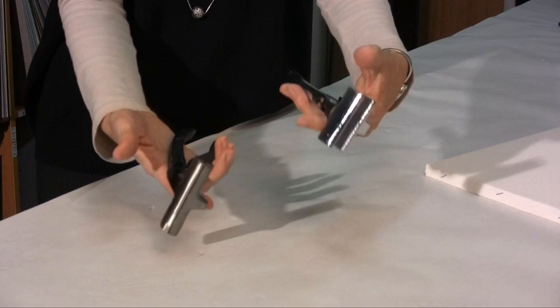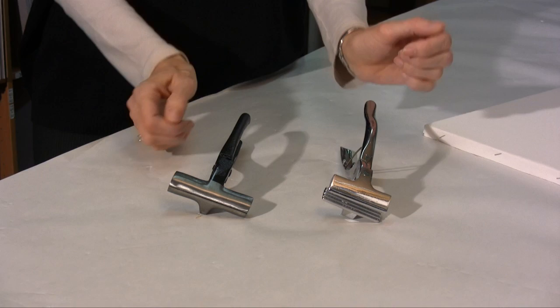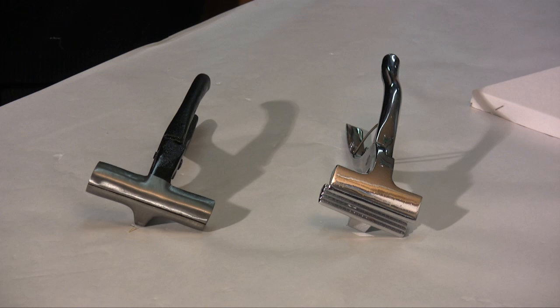The chrome pliers are lighter. They weigh 360 grams, while the black pliers weigh 570 grams. The price of the chromed pliers is more than double that of the black pliers.